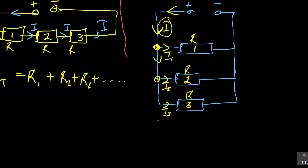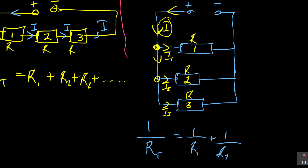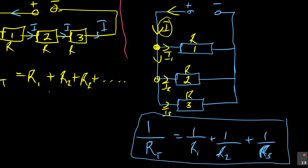The formula for parallel resistors says: one over R total equals one over R1 plus one over R2 plus one over R3. This is the formula for resistors in parallel, and the other — R total equals R1 plus R2 plus R3 — is for resistors in series.